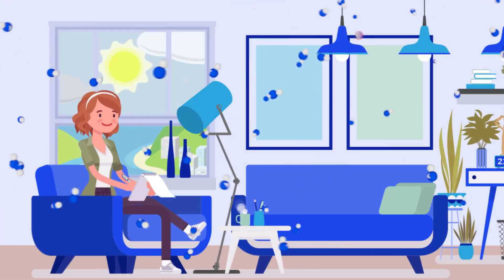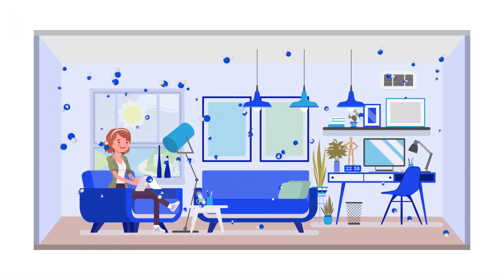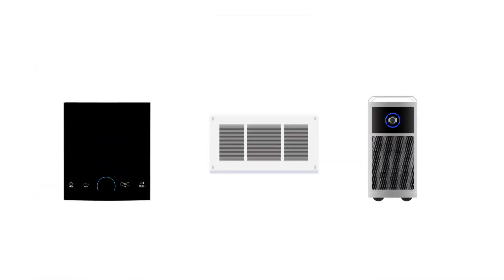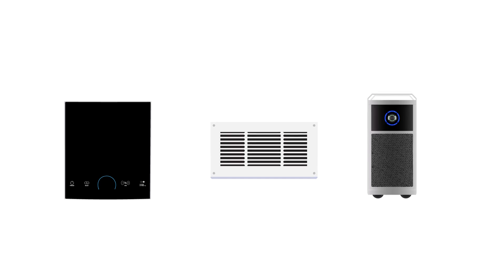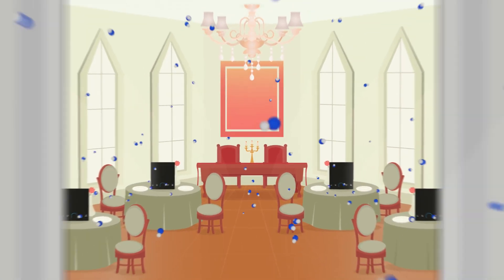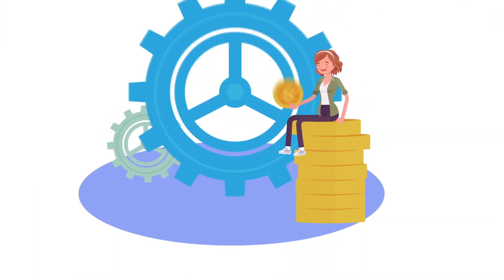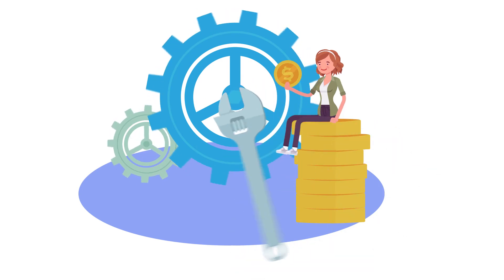ActivePure technology works 24-7 in the air and on surfaces. It comes in both portable and built-in units for any indoor space, from expansive ballrooms to elevators. It's affordable, easy to install, and virtually maintenance-free.